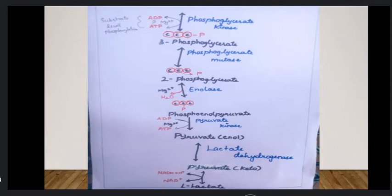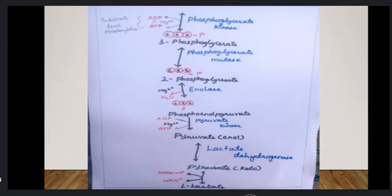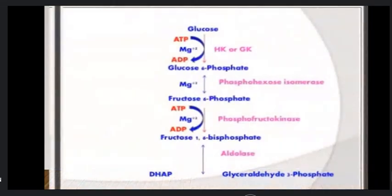Phosphoenolpyruvate (PEP) is converted to pyruvate by pyruvate kinase. ADP is converted to ATP in this substrate-level phosphorylation step. In anaerobic conditions, lactate dehydrogenase converts pyruvate to lactate, with NADH + H+ being oxidized back to NAD+. This concludes glycolysis.